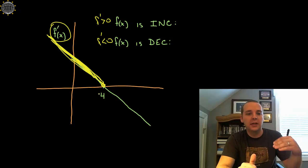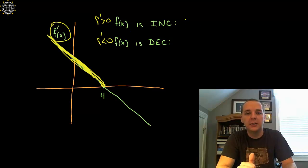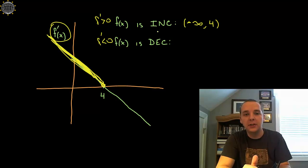Alright it's hanging out above the x-axis so the original function will be increasing from negative infinity up to 4. Now the derivative graph is decreasing but the original function is increasing because the slopes are positive, the slopes are above the x-axis.